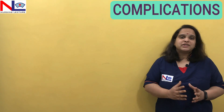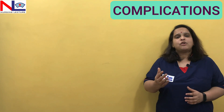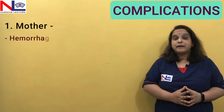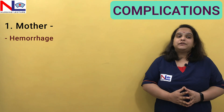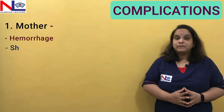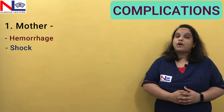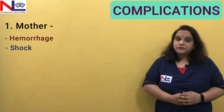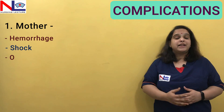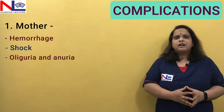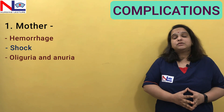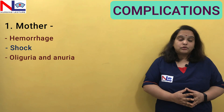Regarding maternal complications: there is heavy hemorrhage, and if the bleeding is too heavy, the woman can go into hypovolemic shock. With decreased blood volume, there is less perfusion to major organs, which can lead to renal failure — the woman may have anuria or oliguria because organ perfusion is inadequate. In such conditions, kidney failure can occur.